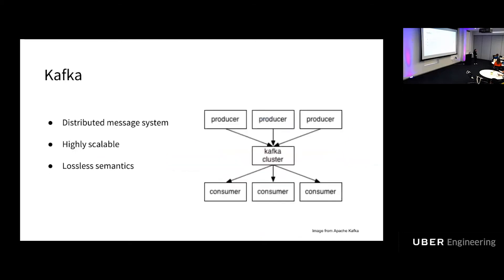Let's deep dive into Kafka. As mentioned, Kafka is a distributed messaging system — users can keep producing or consuming messages, and Kafka handles persistence, scalability, and fault tolerance. Kafka is very famous for its high scalability. At Uber, our Kafka cluster handles trillions of messages per day, and we actually have the second largest Kafka cluster in the whole industry. Our Kafka cluster can also provide lossless semantics, which is super important for use cases like finance or payment.